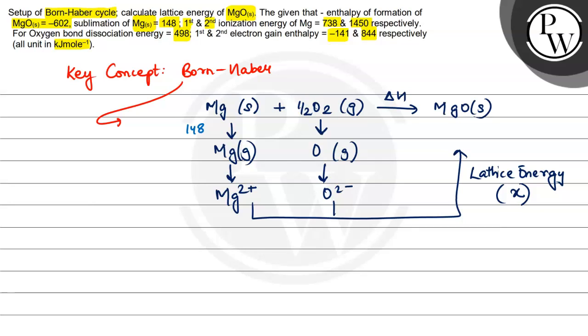Then we have ionization because here two electrons are lost. We'll write first and second ionization enthalpy. So 738 and 1450, right? 738 and 1450.